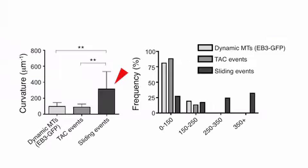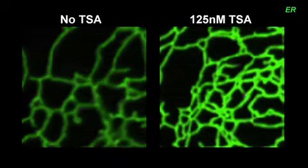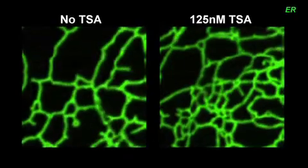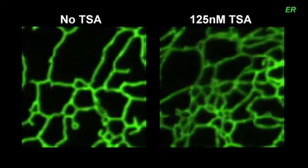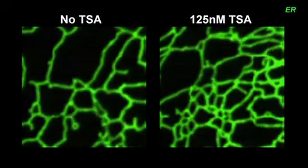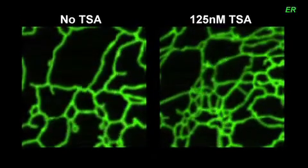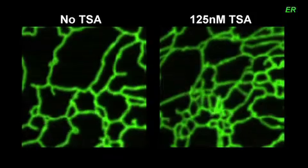Volz and colleagues — including Jonathan Friedman and Brant Webster — showed that sliding ER tubules followed these meandering microtubule tracks, whereas TAC movements took a straighter route through the cytoplasm. Moreover, increasing microtubule acetylation with the drug trichostatin A boosted the amount of ER sliding but had no effect on the frequency of TAC dynamics.